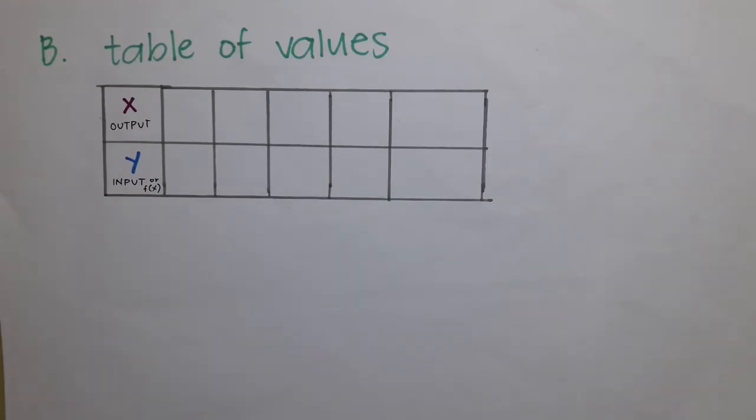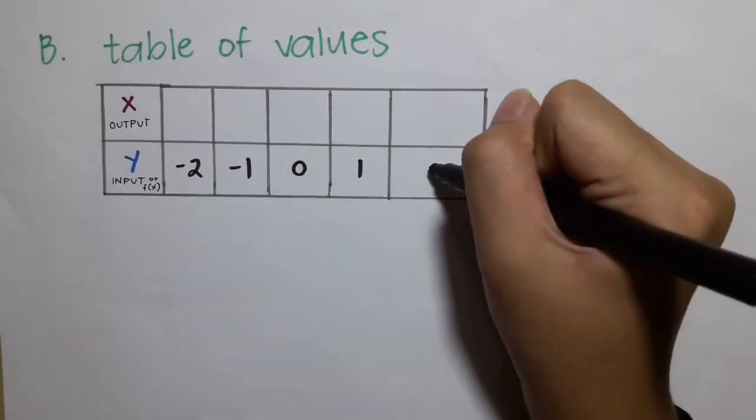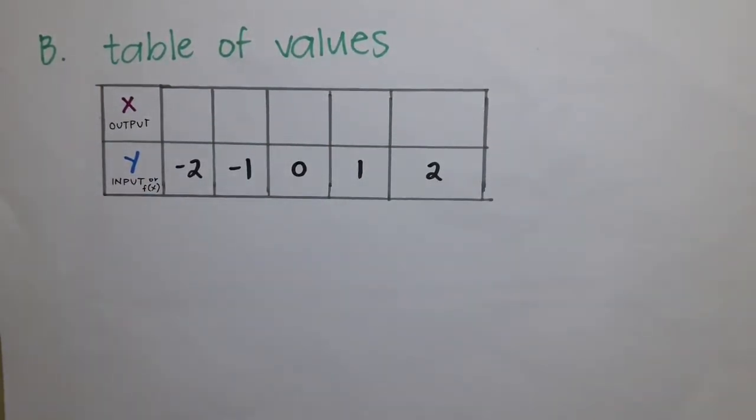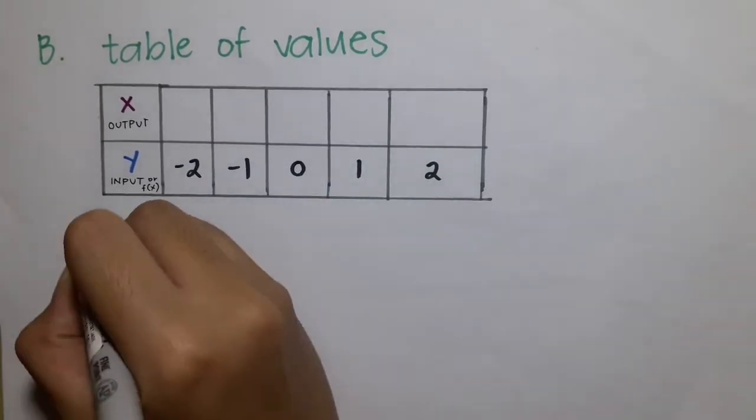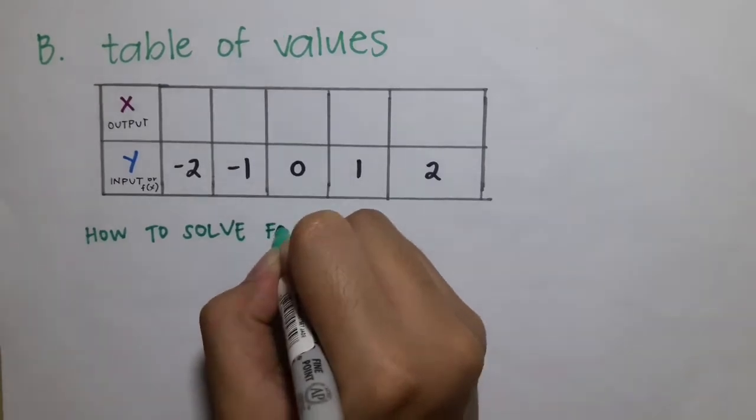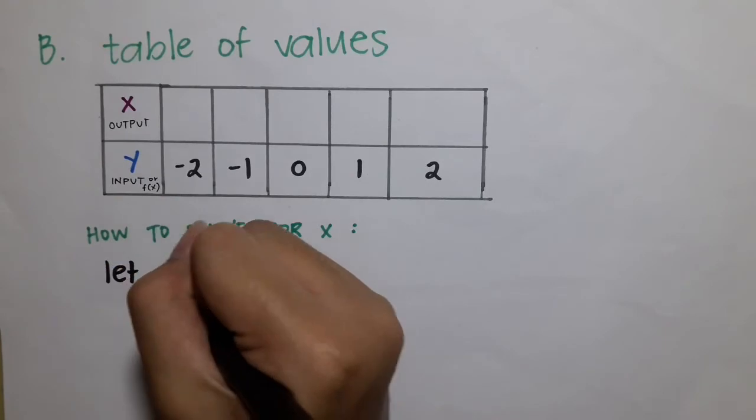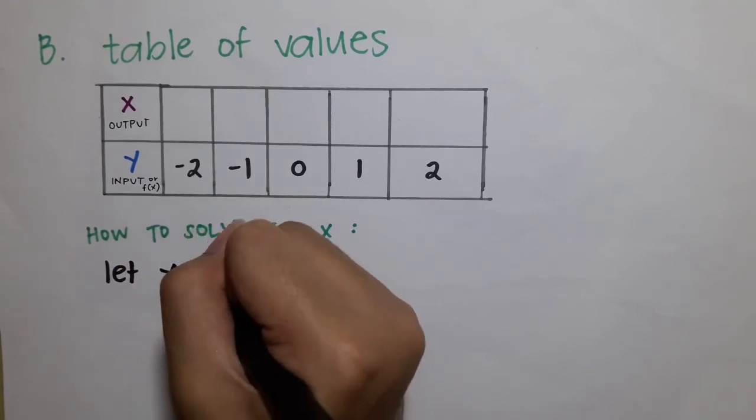Let's proceed to table of values. How to make it? Simply put and assign your numbers in the y as an input. To find the x on the output, simply substitute it into the logarithm equation. Okay, let's solve. So, we will start at negative 2.